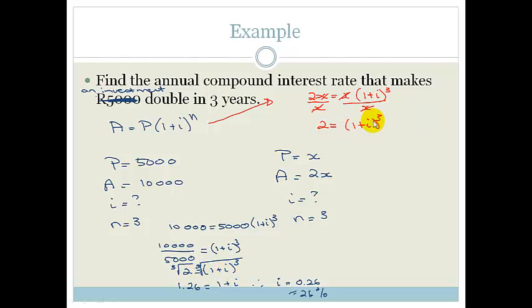To get rid of the 3, we cube root both sides. We get 1.26 equals 1 plus i. Therefore i equals 1.26 minus 1, so i is 0.26.